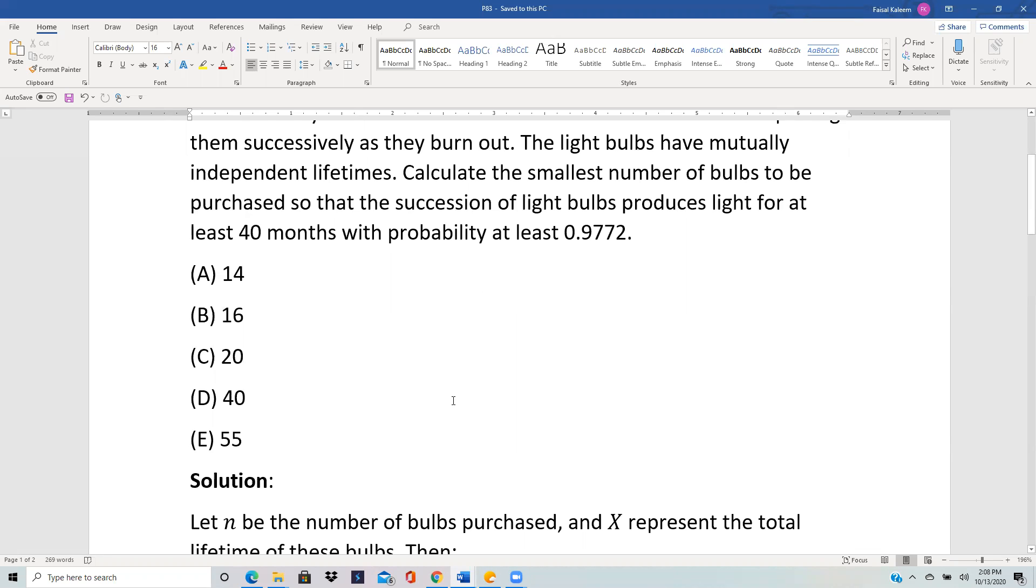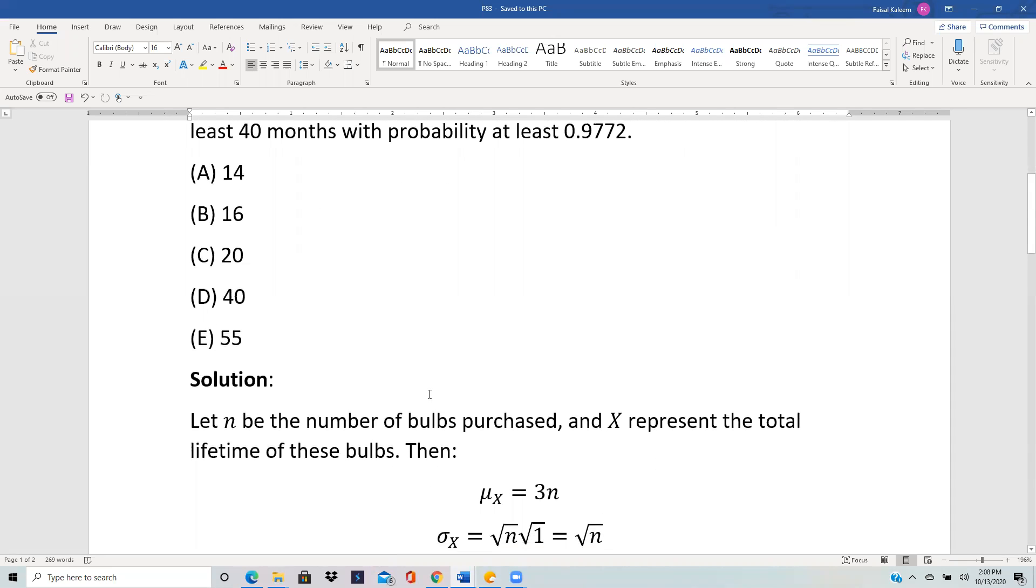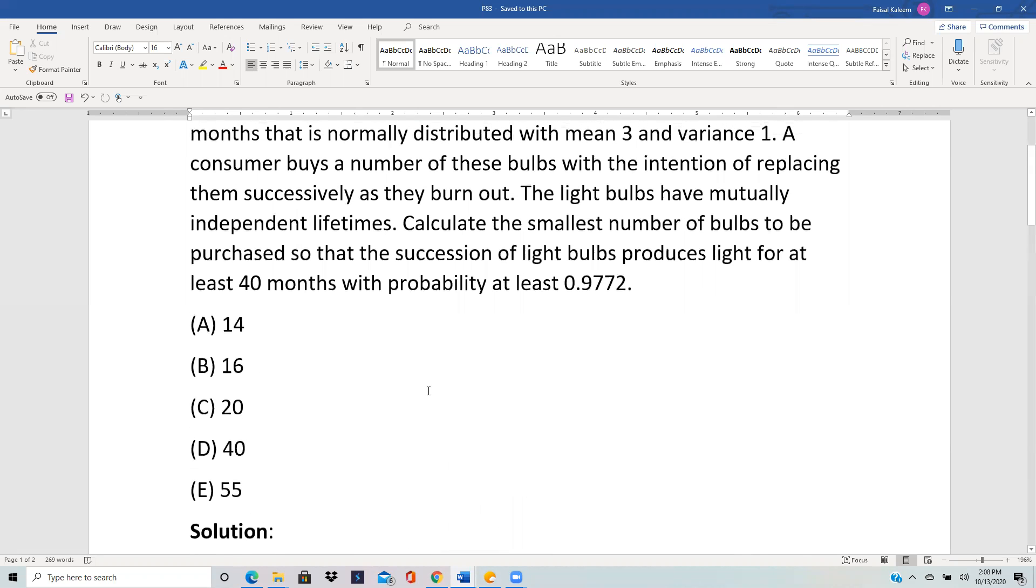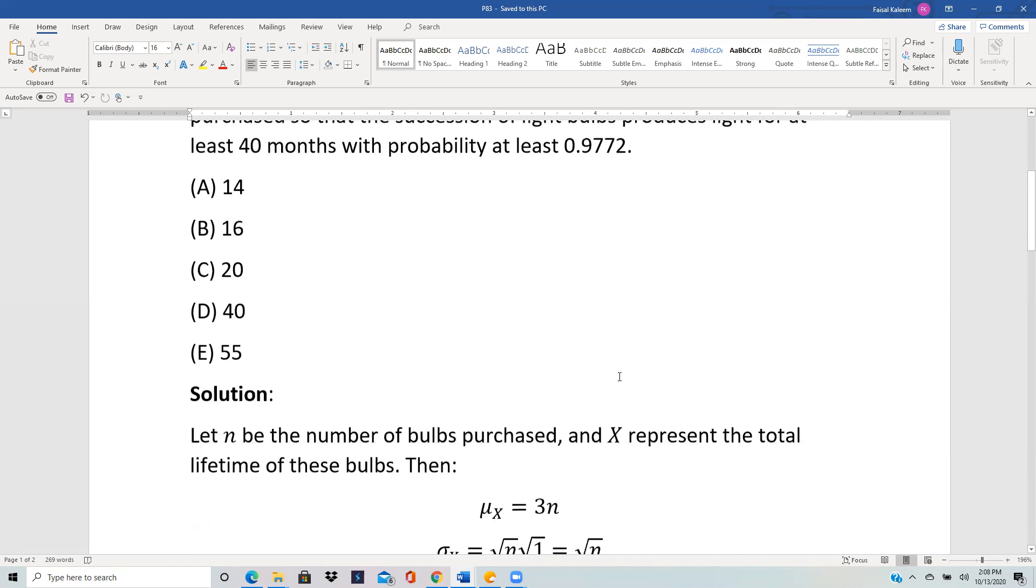Let n be the number of bulbs we purchase and let X represent the total lifetime of these bulbs. Since the mean of each bulb's life is three months, if you have n bulbs then the mean would be 3n.